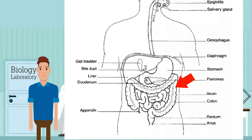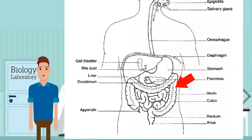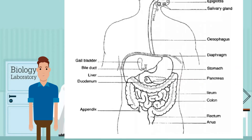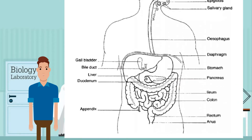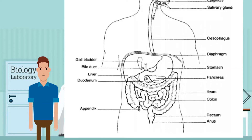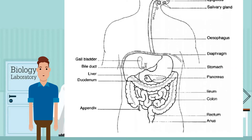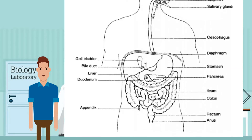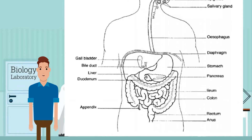Lastly, the large intestine — the final organ of the digestive system. The large intestine is comprised of the colon, which absorbs excess water; the rectum, which stores fecal material before egestion; and the anus, the site of removal of undigested food as feces.